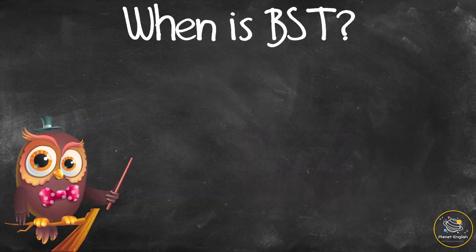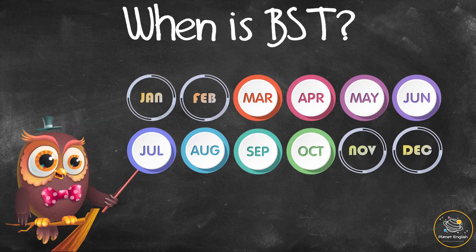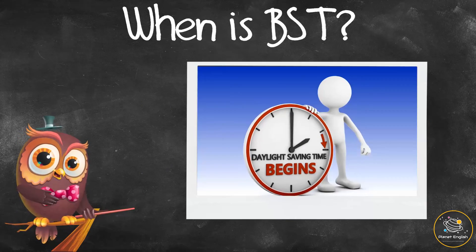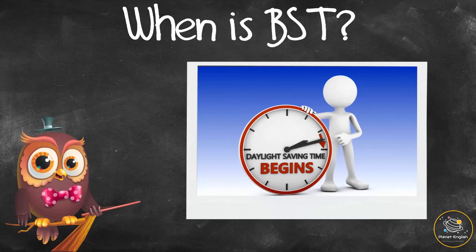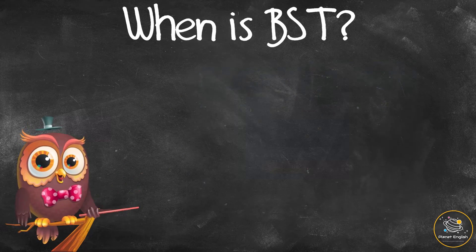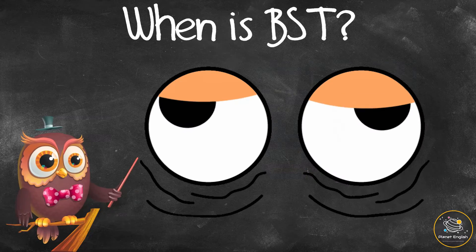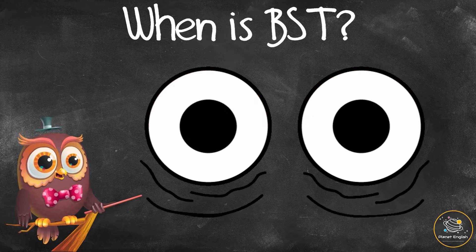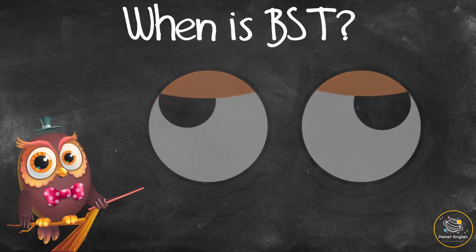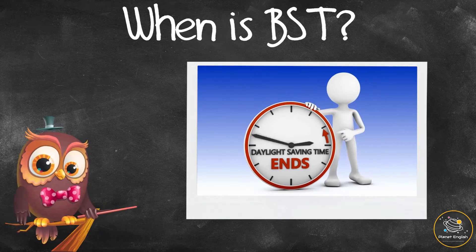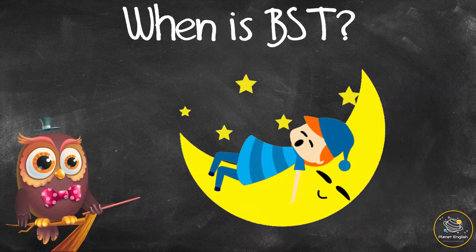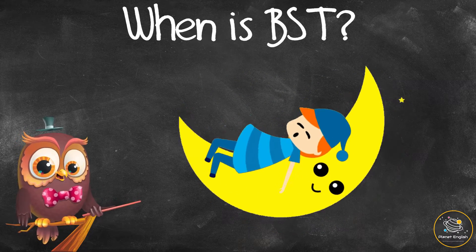When is BST? In the UK, British Summer Time lasts from March to October. The clocks are moved forward by one hour at 1am on the last Sunday of March, so everyone is very tired because they lose one hour. The clocks are turned back by one hour at 2am on the last Sunday of October.